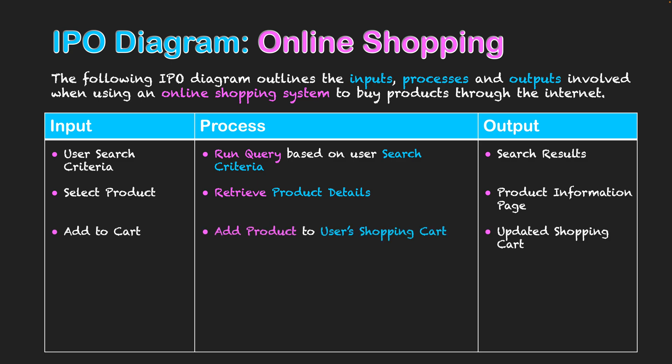The next step is that the user wants to add this product to their cart — they decide they're going to buy it. The process is adding the product to the cart, and the output of the system will be the updated shopping cart where all the selected products are accumulated as the user navigates the online shopping site.